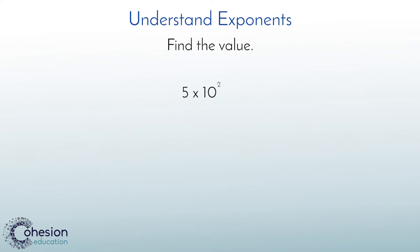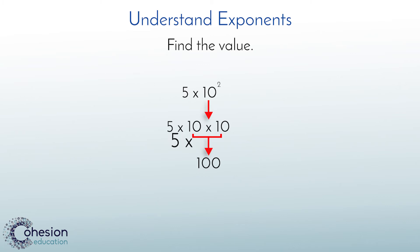To extend this type of problem, students may encounter this type of equation to solve: 5 times the second power of 10, which is similar to our last problem. We will just have to multiply the exponent result by 5 once we have solved it. The second power of 10 is the same as 10 times 10, which is 100. Then we multiply by 5 for a product of 500.